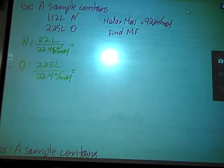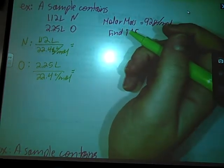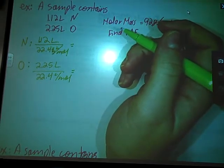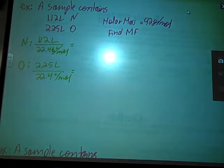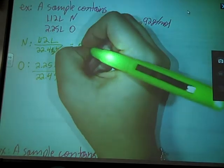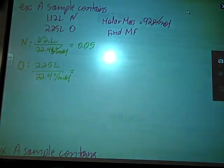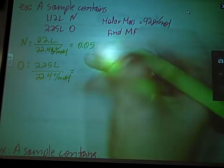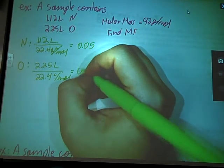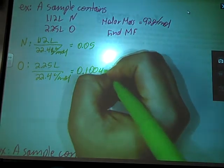Let's see here. When I divide those two, I'm going to get something. I thought I already had this worked out, but apparently not. 1.12 divided by 22.4 gives me 0.05. 2.25 divided by 22.4 gives me 0.100446.